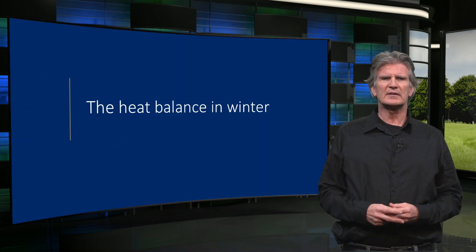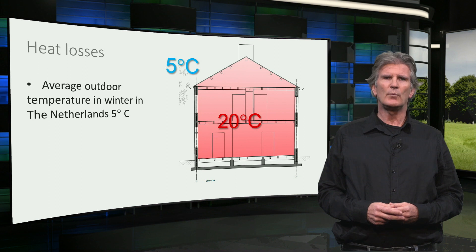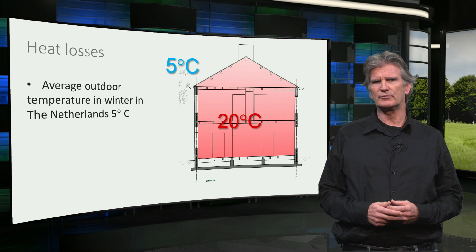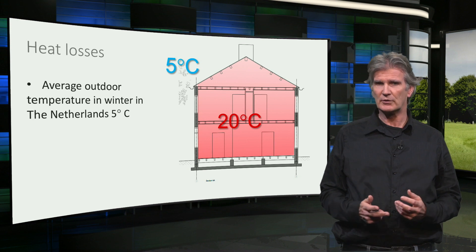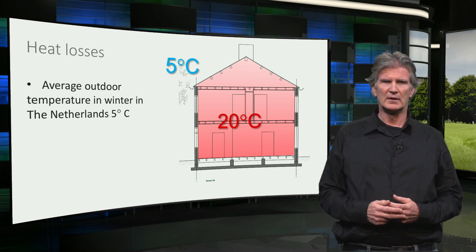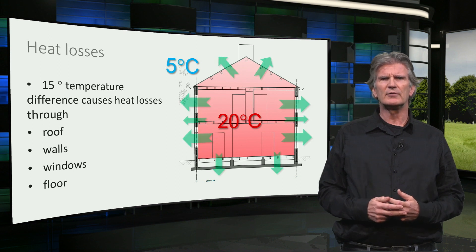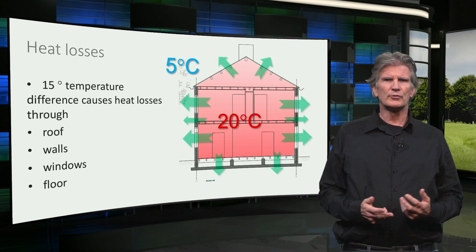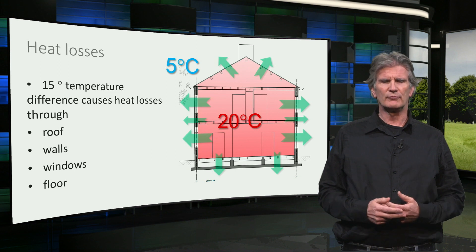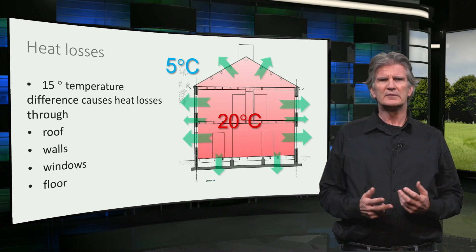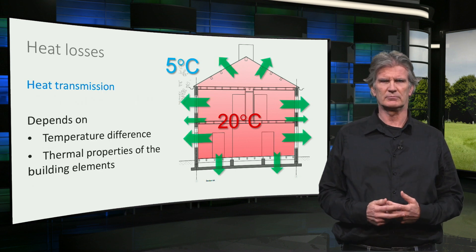First, let's have a look at the heat balance on a winter's day. In winter the house is heated to around 20 degrees centigrade, where the average outdoor temperature is, for example, 5 degrees in the Netherlands. This 15 degree temperature difference causes heat to flow through the building envelope — the roof, the walls, the windows, and the floor. This is what we call heat transmission.